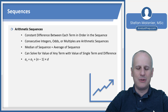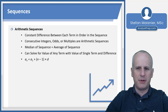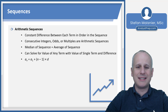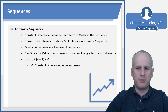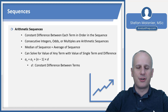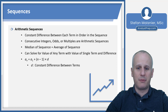So any term in sequence a can be found using the equation: the first term in a — because you have to set where it starts — plus n minus 1, meaning the term number minus 1, times d, where d is the constant difference between the terms. If you have any of the terms, you'll be able to solve for any other term, provided that you know the difference between them.